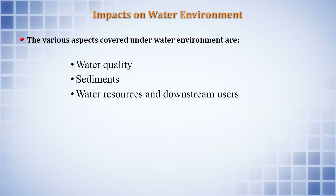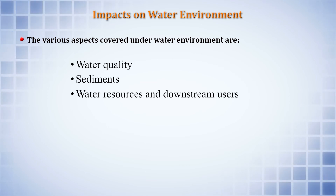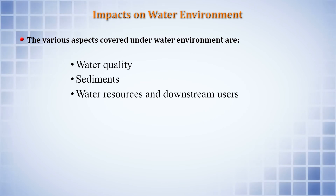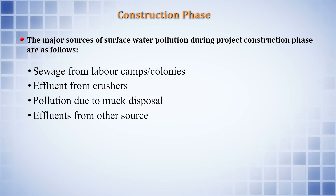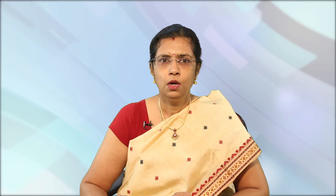For the water environment, the description must cover water quality, sediments currently present and those that will be generated, water resources, and downstream users. In the construction phase, major sources of water pollution include sewage from labour camps, effluents from crushers, and muck disposal. In the operation phase, pollution sources include project colonies, reservoir water quality, eutrophication risk, and sediments.